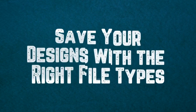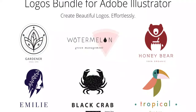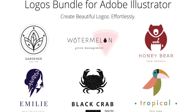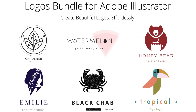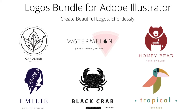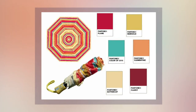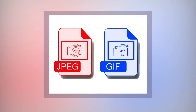Step 10: Save Your Designs With The Right File Types. Finally, it's time to save your designs and send them for production. It's best to save graphics, images, and logos in Illustrator formats. Also, use Pantone registered colors to match print colors and aid clarity of design. File types like JPEGs and GIFs have low resolution and can affect the quality of your umbrellas.